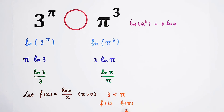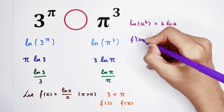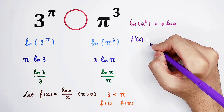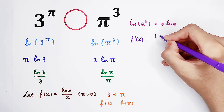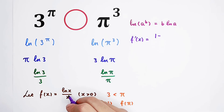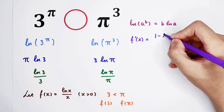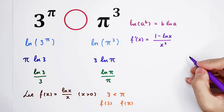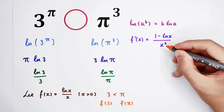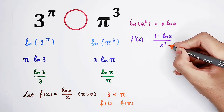The only way is to differentiate this function. f prime of x equals, by the quotient rule: the derivative of the numerator times the denominator — which is (1/x) times x, giving 1 — minus the numerator times the derivative of the denominator, which is the natural log of x times 1. So the numerator is 1 minus the natural log of x, and the new denominator is x squared. Since x is always positive, x squared is always positive.